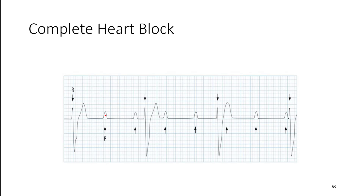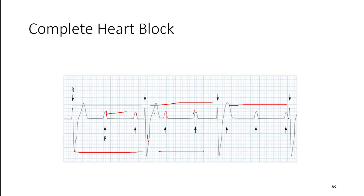On the ECG, P waves look consistent and normal because the SA node is still doing its thing, but the ventricles are wide and abnormal-looking because activity is starting in the ventricles — not controlled by the atria, completely out of sync. R-to-R intervals look fairly consistent, and P-to-P intervals look consistent too. Sometimes a QRS complex will fall over a P wave. But there is no coordination between the two — that is a complete heart block, with no communication whatsoever between the atria and ventricles.